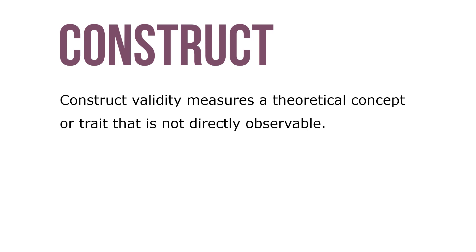For example, intelligence is a construct that's measured by an IQ test, and research has supported the IQ test's validity. Intelligence is a major predictor of job performance. However, the Uniform Guidelines say that this method of validation is far more difficult to demonstrate than the other two options, so it would be best if you could show that a measure has criterion-related or content validity.